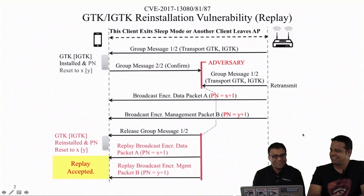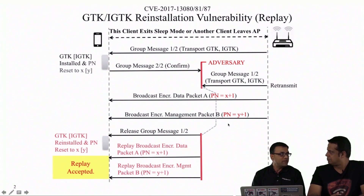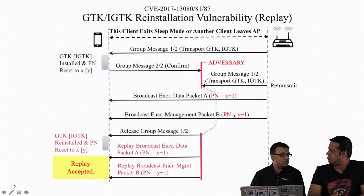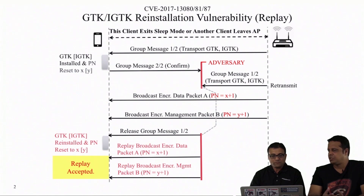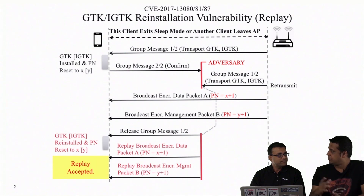During that time, the AP just keeps transmitting whenever broadcast/multicast packets reach the head of its queue — it's not waiting for the key exchange to complete. The key exposure here is the ability to do a replay. Any application that doesn't handle replay protection — or receiving duplicate packets of the same type — could be vulnerable.